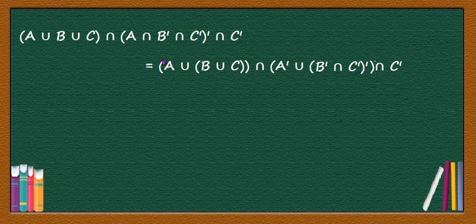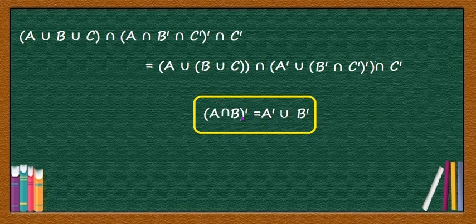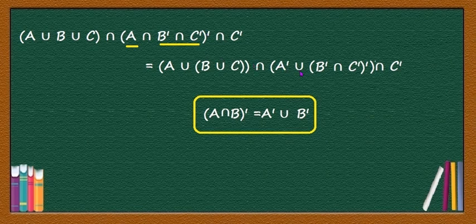See here, you can apply De Morgan's theorem: (A ∩ B')' = A' ∪ B. For these two terms, A is A only, B is B' ∩ C', and applying De Morgan's theorem gives A' ∪ B.